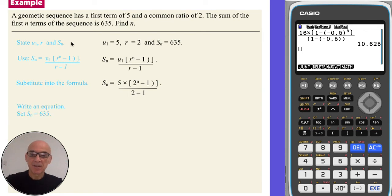So to find n, the number of terms, we use the fact that the sum we're told was 635 to write an equation. By equating Sn to 635. Solving this equation will give n. And we can use Solver on the calculator to find n.